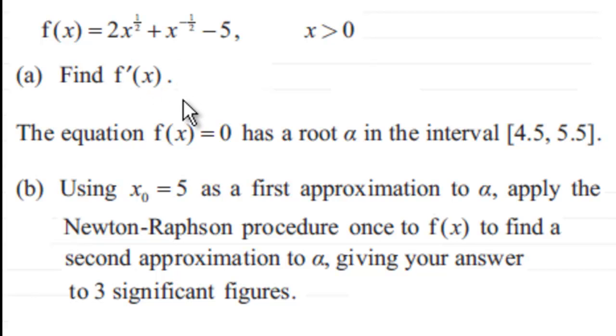The first differential of f(x) with respect to x. And then it goes on to say the equation f(x) equals zero has a root alpha in the interval from 4.5 to 5.5. And using first approximation x₀ as equal to 5, we've got to find that approximation to alpha and apply the Newton-Raphson procedure once to f(x) to find a second approximation to alpha, giving your answer to three significant figures.